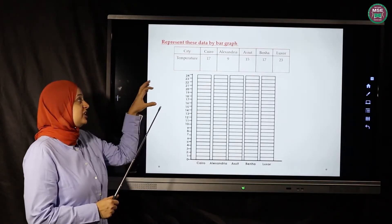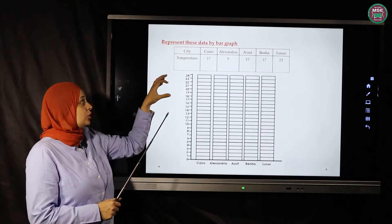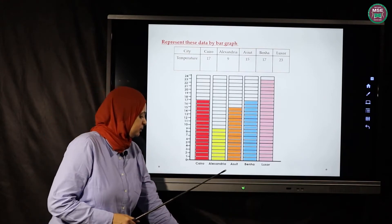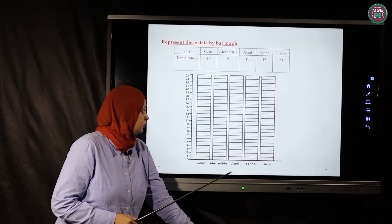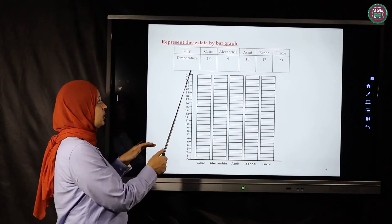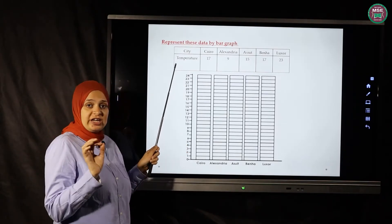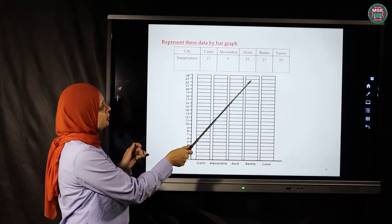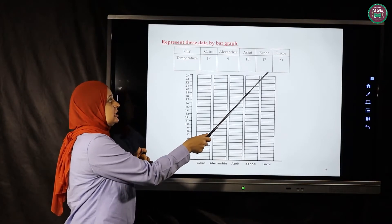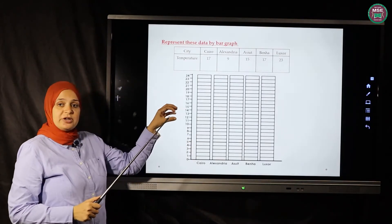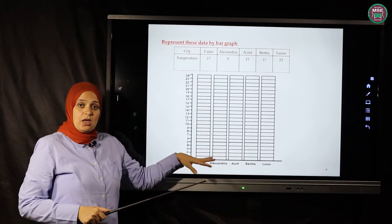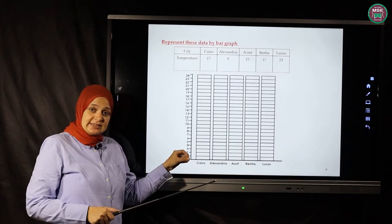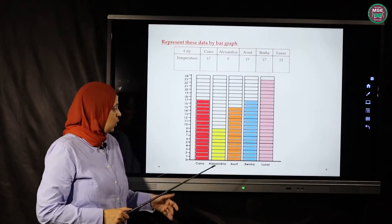Now we are going to represent data a different way. We'll take numbers from a table and draw them on an empty bar graph. This shows the temperature for each city in Egypt: Cairo is 17, Alexandria is 9, Asyut is 15, Banha is 17, and Luxor is 23.